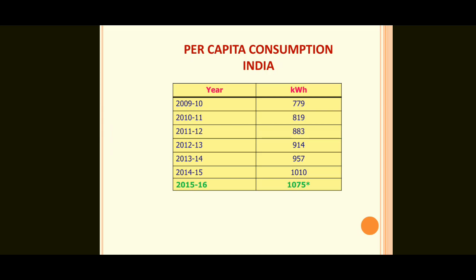Per capita consumption in India in kilowatt hours per capita: 2009-10: 779; 2010-11: 819; 2011-12: 883; 2012-13: 914; 2013-14: 957; 2014-15: 1,010; 2015-16: 1,075. For every year the kilowatt hour consumption is rising.